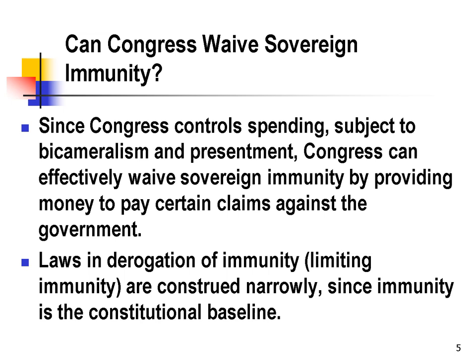The courts have ruled that laws that waive sovereign immunity should be construed very narrowly. These are termed laws in derogation of immunity, meaning they limit immunity. The courts are suspicious of these because the Constitution establishes a baseline of immunity. The court will allow Congress to create causes of action, but if a claimant doesn't fall exactly under the terms of the statute, they will fall back to immunity and their claim will fail.